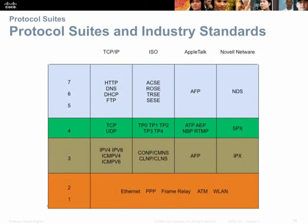The layered model shows layers one through seven, with different protocols operating at each layer. For example, HTTP at the top layer needs the help of TCP or UDP, which in turn needs IPv4, IPv6, or ICMP, which in turn needs a media-specific protocol at the bottom like Ethernet, Frame Relay, or PPP.